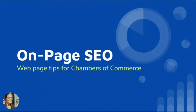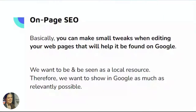To help you improve your different webpages on your chamber website, I'm going to teach you a little bit about on-page SEO. This is a term you can Google to learn more in-depth about later on. There are multiple types of SEO, which is search engine optimization, and I'm going to focus on on-page because it's a little less technical and easier for almost anybody to do. With on-page SEO, we want to make small tweaks when editing our webpages that will help them be found on Google.